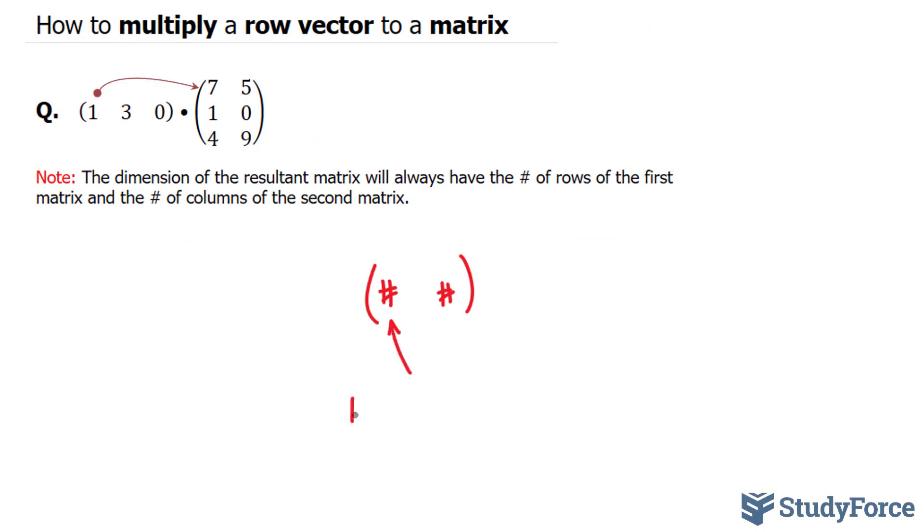you will take 1 times 7 plus 3 times 1 plus 0 times 4. Adding all of these up will give you that first number.